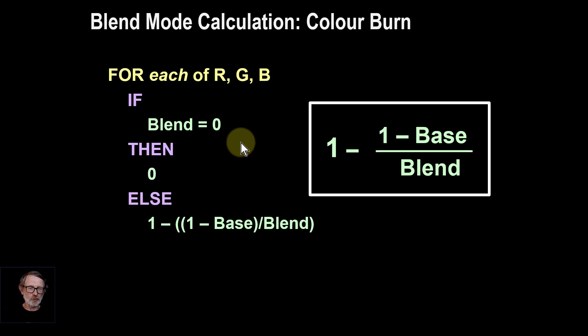So just a reminder, this is the calculation, which says for each of red, green, and blue in each channel, if the blend is zero, then the result is zero. This is taken out separately, otherwise you get a divide by zero. Otherwise, you get this calculation here. Something to note about this is there's a 1 minus here and a 1 minus here. What's this about? It's probably worth saying something about this one minus-y thing, because it is a thing.